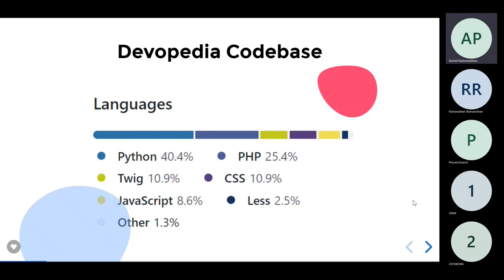In today's talk, we'll be using Devopedia as a case study, so it's useful to look at the Devopedia code base. This slide gives us a summary of what the code base contains. This chart is not something I created — if your code repository is in GitHub, GitHub automatically prepares this chart for you when you navigate to the homepage of the repo.